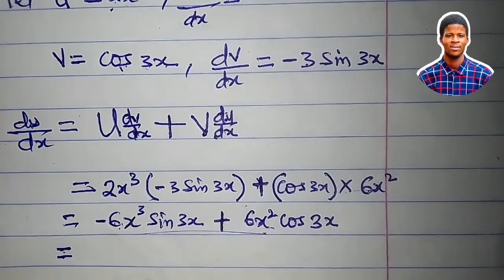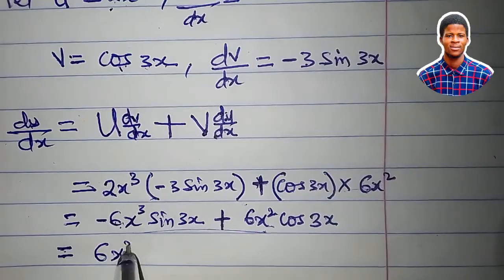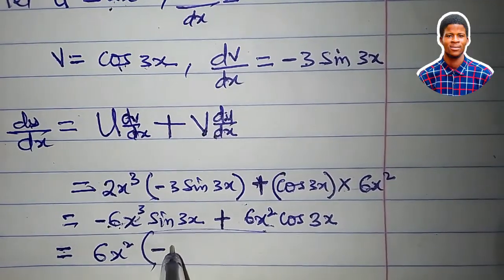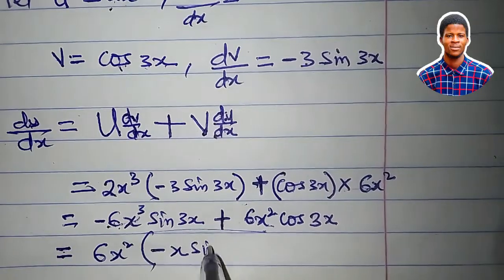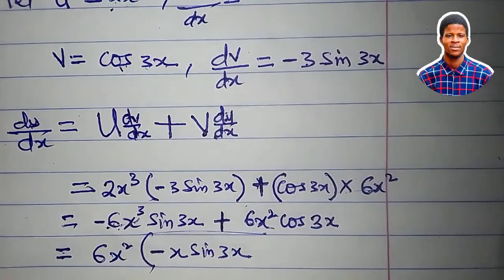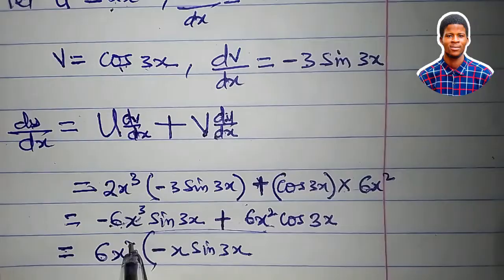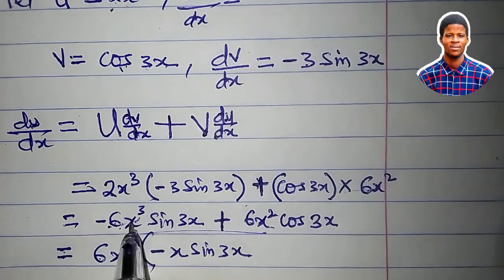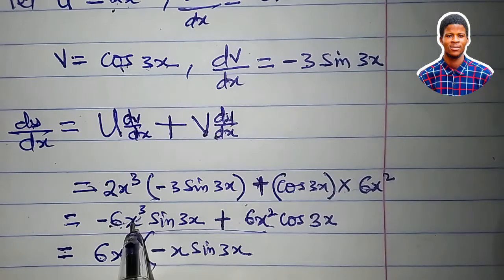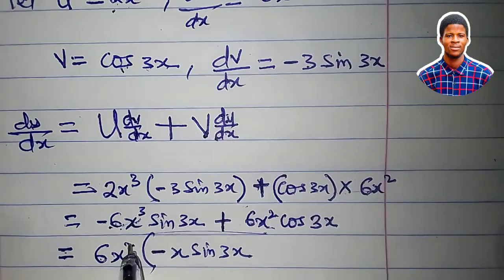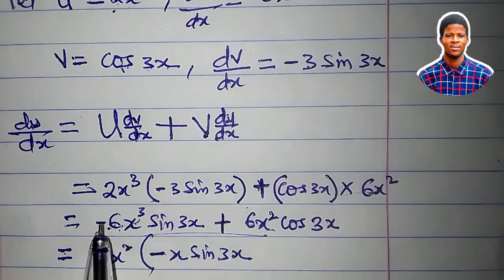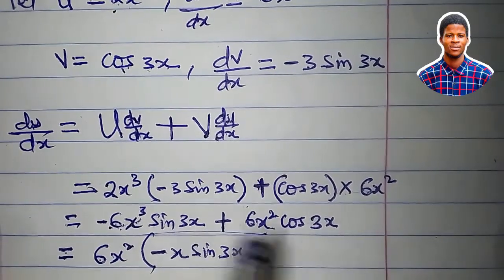6x² is common, bring 6x² out, what will be left here? It's just minus x sine 3x. So that 6x² times minus x, that will be minus 6x³ that we have here. And then 6x² times minus x sine 3x is minus 6x³ sine 3x.